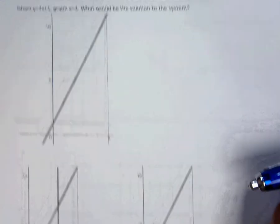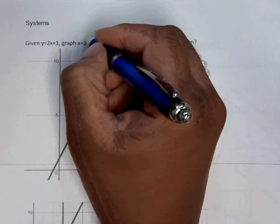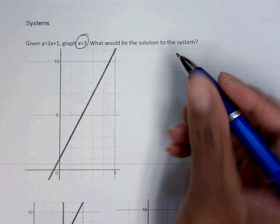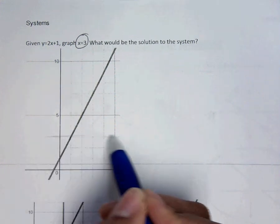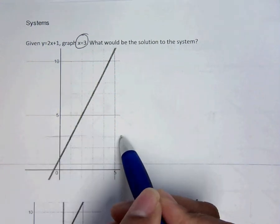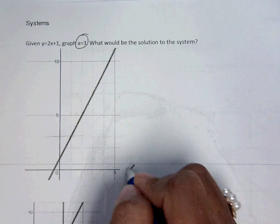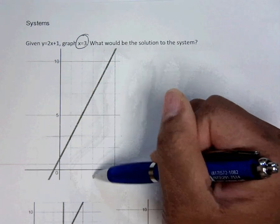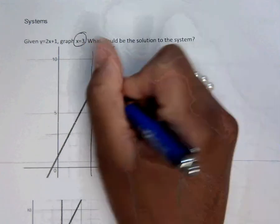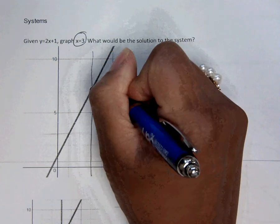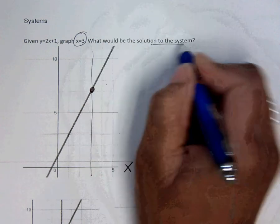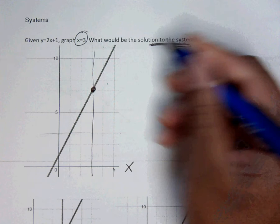The reason this question was hard was because you had to graph x equals 3, and everybody thinks x equals 3 is this. But remember, that's y equals 3. x equals 3 has to cross the x-axis. So that's here. And that is the solution to this system, 3, 7.